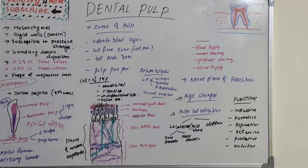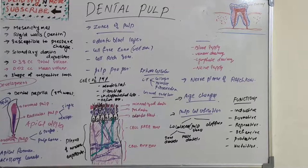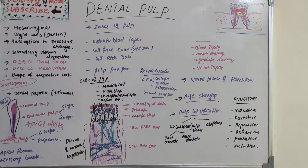Dental pulp is a smaller chapter compared to enamel, dentine, and the periodontal ligament. We have now finished enamel, dentine, pulp, and the periodontium. The periodontium has four sections: two hard tissues — cementum and alveolar bone — and two soft tissues — gingiva and periodontal ligament. The next topic in dental histology will be salivary glands. Make sure to learn the basics of tooth formation thoroughly before moving on to other structures. Thank you.